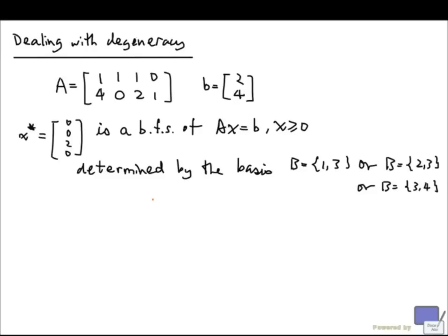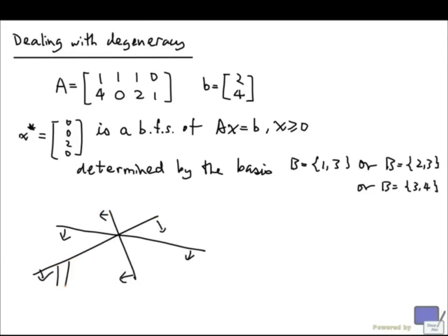What we're going to do is nudge things a little bit — we're going to perturb the constraints. Let me illustrate by a very simple example. Suppose I have a picture that defines my feasible region, and if you look at this intersection point, it's an intersection of these two lines, or these two lines, or these two lines. So there are three ways to define this point via intersection of two lines.